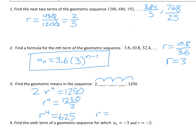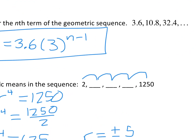Because our exponent is even, we could have two answers: 5 and negative 5. That means the second number could be plus or minus 10. However, the third blank can only be 50. If r is 5, we have 2, 10, 50. If r is negative 5, we have 2, negative 10, positive 50. So either way, the second blank is positive 50. And then the last blank could be positive or negative 250.